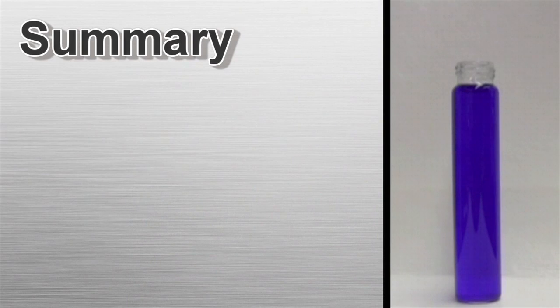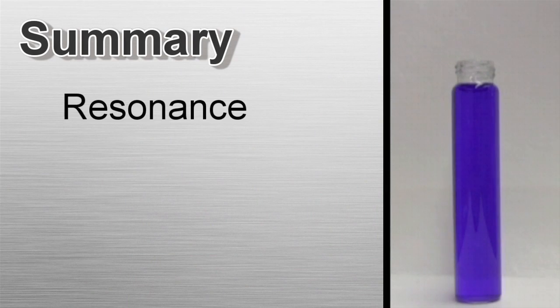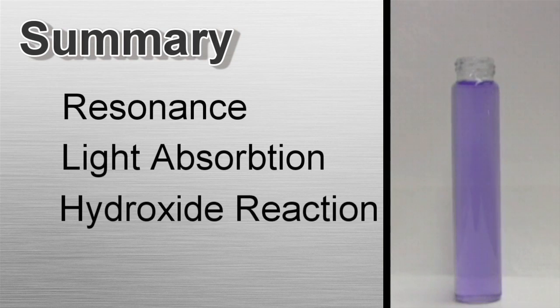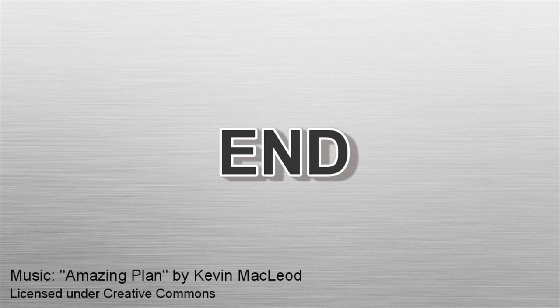In summary, crystal violet appears violet because the resonance in the structure allows it to absorb light in the visible spectrum. When the crystal violet molecule finds a hydroxide ion, they react, the resonance is disrupted, and the crystal violet can no longer absorb light in the visible spectrum. Therefore, it's decolorized.